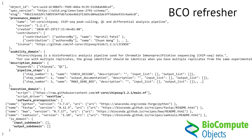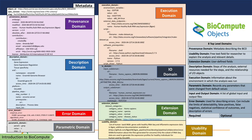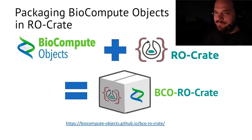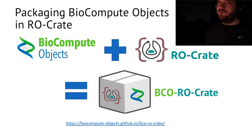Here you see some JSON for a BioCompute Object — it's not meant to be read as a human. The key concept is that you have different domains: provenance domain, usability domain, description domain, and execution domain, describing different aspects of a workflow. You say where did it come from, how do you run it, what does it need, and what is it actually for — very important so you don't run it on the wrong species or something. What I'm looking at today is how to combine these two standards, RO-Crate and BCO, which both describe things but not quite in the same way. The idea is to put BioCompute Objects into RO-Crate.